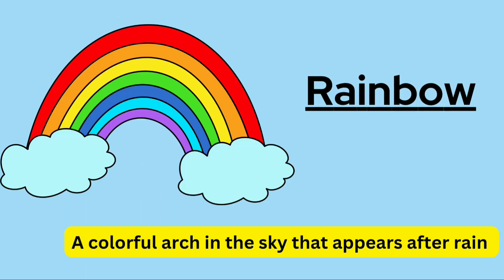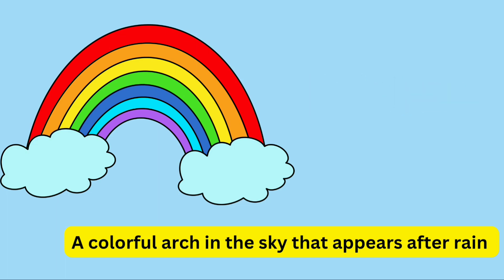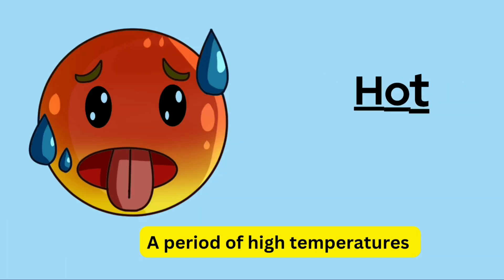Rainbow: a colourful arc in the sky that appears after rain.